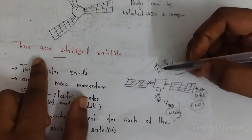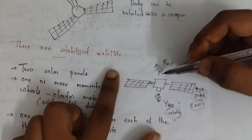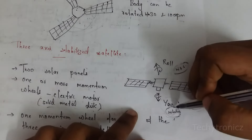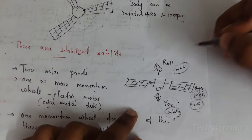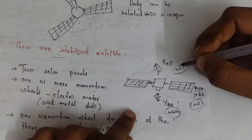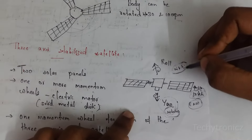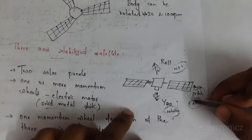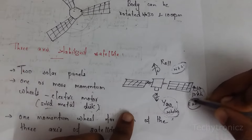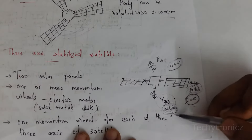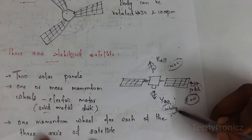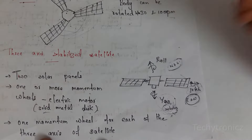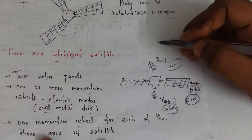This is the 3-axis stabilized satellite. The three axes are: Roll — movement of the satellite in the north-south direction; Pitch — movement of the satellite in the east-west direction; and Yaw — rotation of the satellite. By using these three axes, the satellite position can be corrected if it drifts.